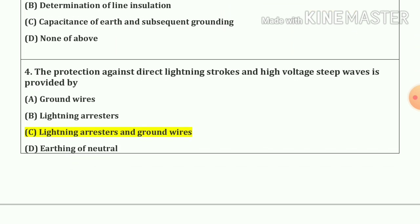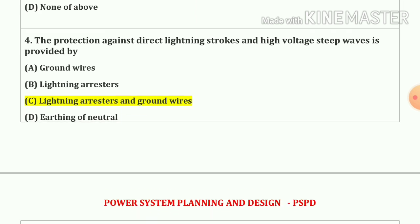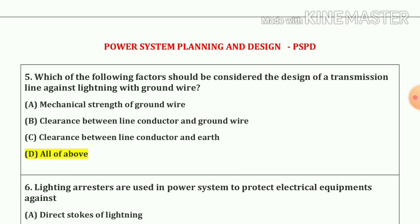Question number 4. The protection against direct lightning strokes and high voltage steep waves is provided by lightning arresters and ground wires. Question number 5. Which of the following factors should be considered in the design of a transmission line against lightning with ground wire? Our answer is all of the above — A, B and C.